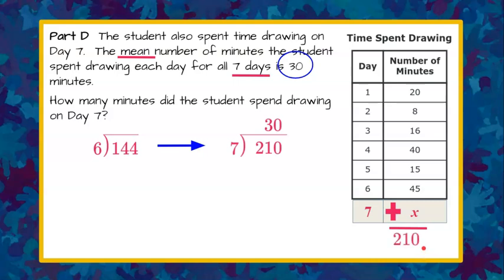So we're working backwards. 30 times 7 is 210. 210 divided by 7 will be 30. So now we know that our sum of minutes has changed to 210 after 7 days. When it was 6 days it was 144. So if we subtract the sum of our 6 days we get 66. So that tells me that on day 7 the student spent 66 minutes drawing.